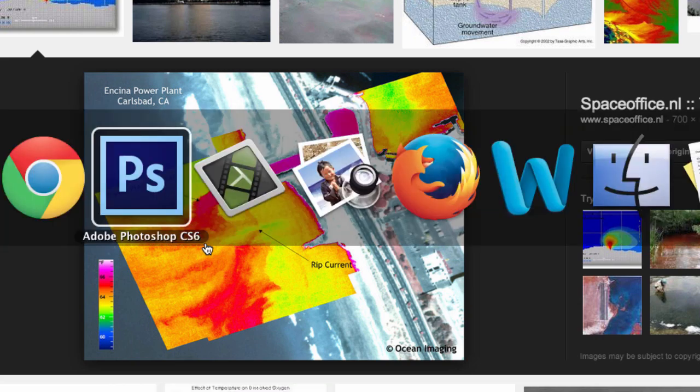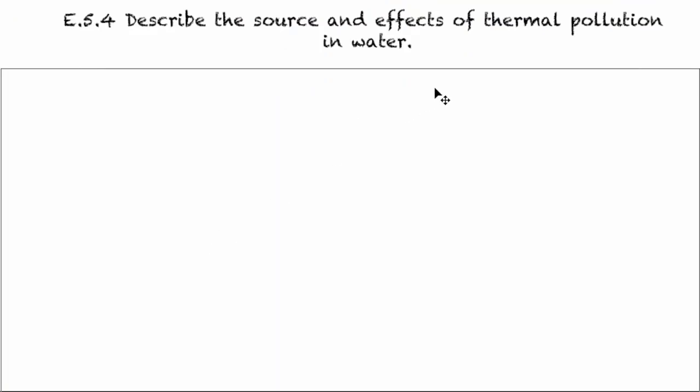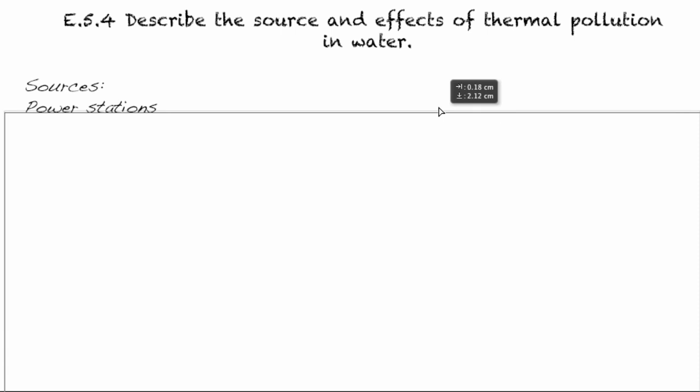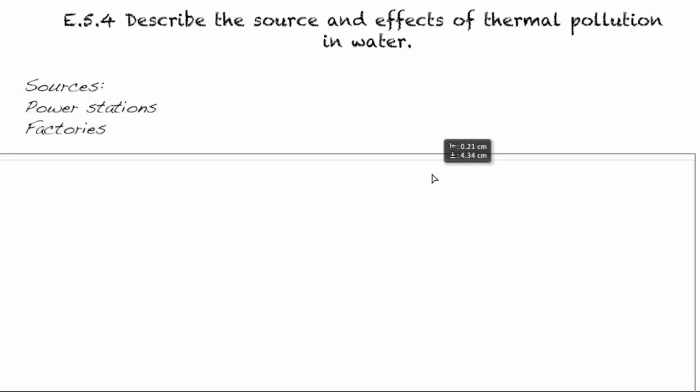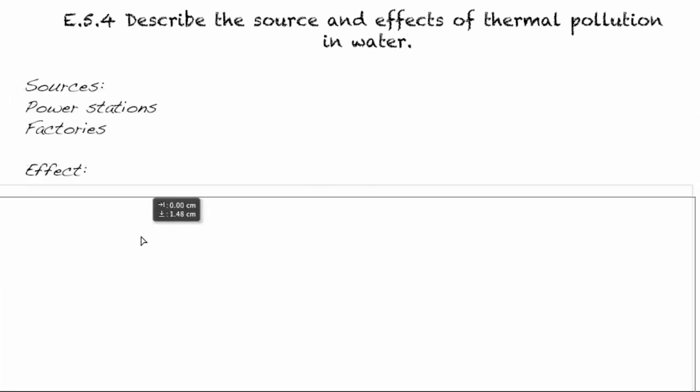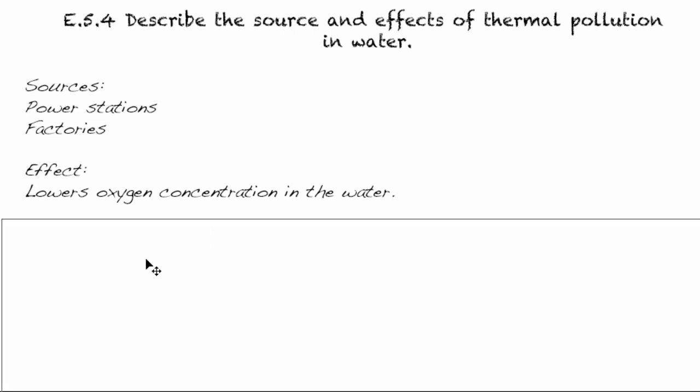And that can definitely cause some problems because oxygen concentration decreases in higher temperatures. So that comes from power stations and factories. The effect is it lowers the oxygen concentration in the water.